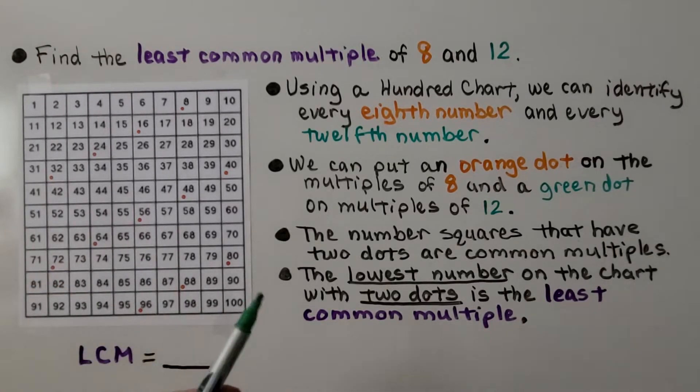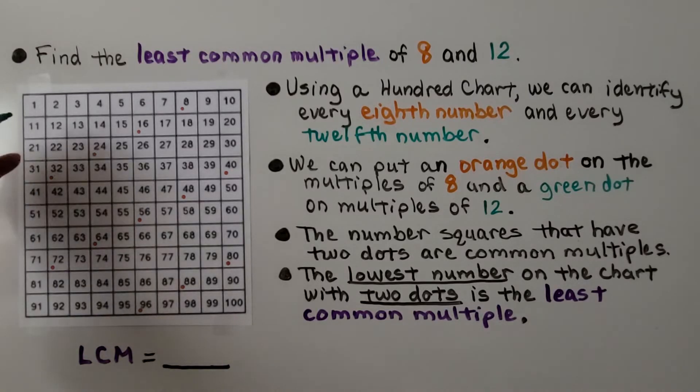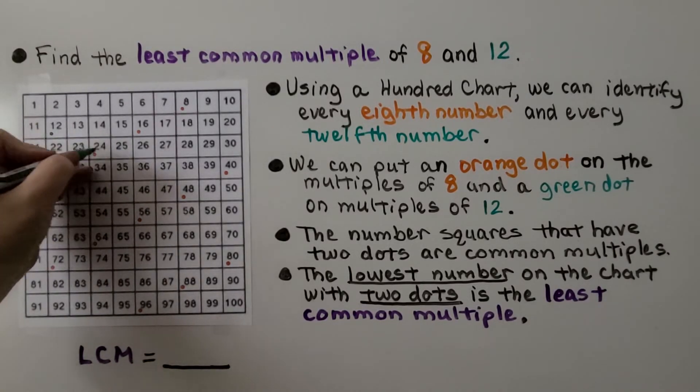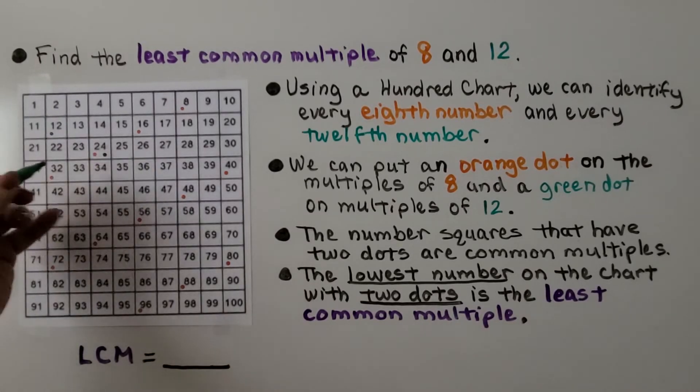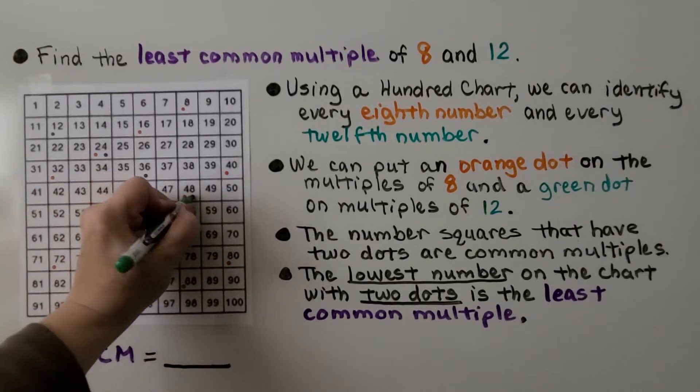Now we can do it for 12s. Do you know your 12 facts? The first one's going to be on the 12 itself. The next one is going to be 12 times 2, which is 24. 12 times 3, which is 36. 12 times 4, which is 48.